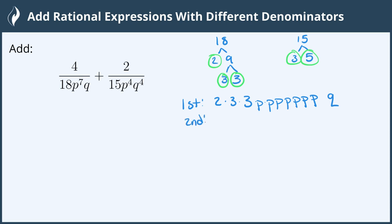And now our second denominator we have 3 so we'll put a 3 here. We also have a 5 and we have 4 p's: 1, 2, 3, 4 and 4 q's.